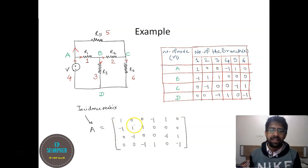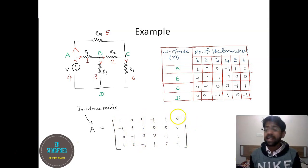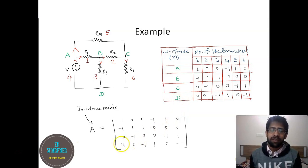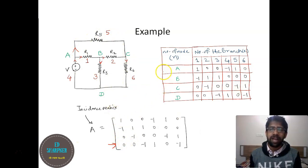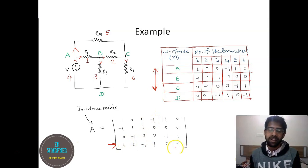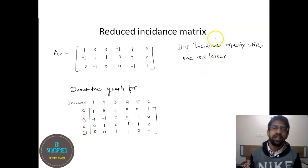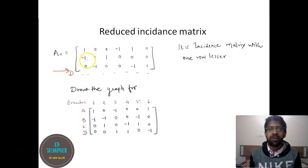As you can see, the sum of values in each column equals zero. This is a key characteristic of the incident matrix: the summation of all values in any particular column is always zero. This means if you have four nodes, writing information for any three nodes is sufficient — you can always find the values in the remaining row. This reduced form is known as the reduced incidence matrix. For example, if you omit node B's row, you can reconstruct it from the remaining data.